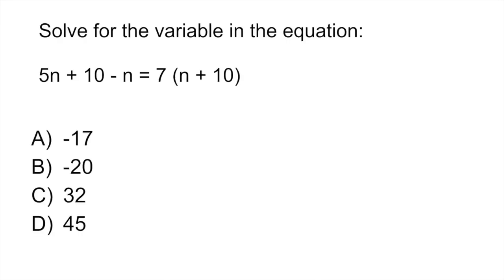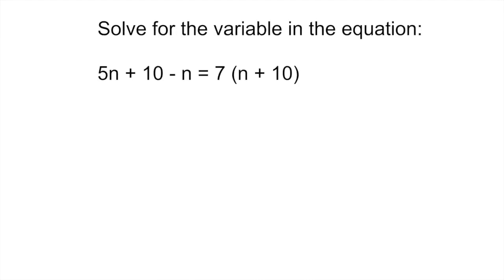Question 4 is also an algebra problem asking you to solve for the variable in the equation. It's really useful to get comfortable with this type of equation. First, tidy up the left side: 5n plus 10 minus n gives you 4n plus 10. Then on the right side, use the distributive property — multiply 7 by each number inside the parentheses.